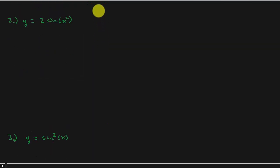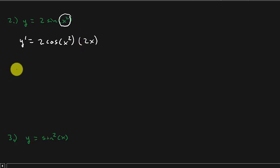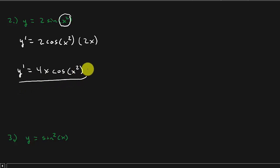Let's look at the next one. We have y equals 2 sine x squared. So y prime is 2 cosine x squared times the derivative of what you're taking the sine of — so times the derivative of x squared. The derivative of x squared is 2x. And so we get y prime is 4x cosine x squared — and there's your derivative.